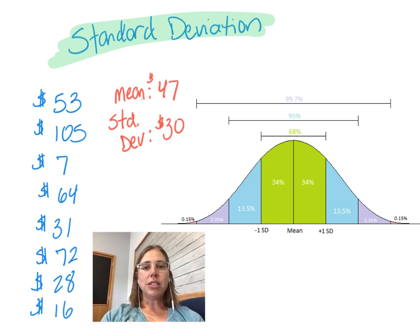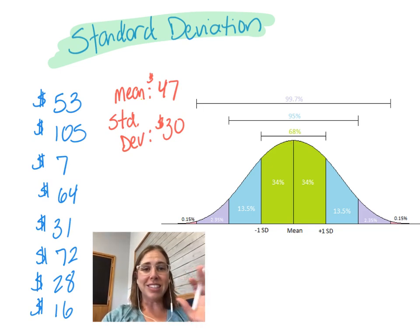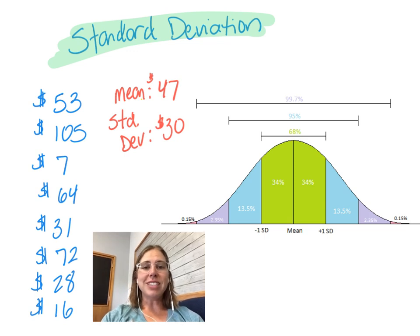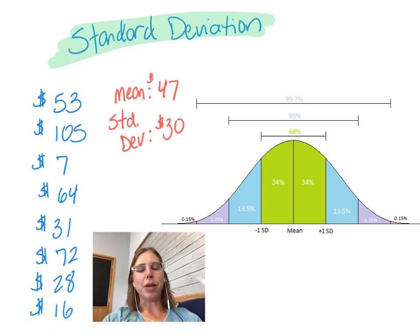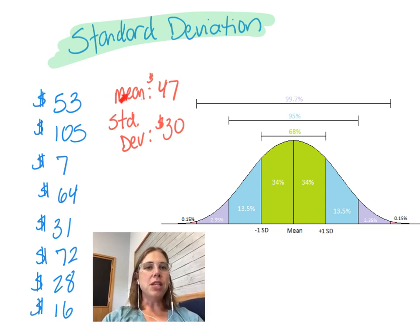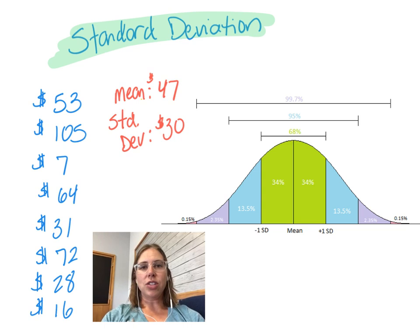You're not going to be expected to calculate it by hand, so don't worry about that. To give us an example, let's say we have some friends and these are the amounts of money in their savings accounts. I'm keeping the numbers small on purpose just to make it easier to work with. The mean of this data is $47 and the standard deviation is $30.